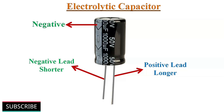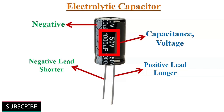Electrolytic capacitors are polarized capacitors. They must be connected in the circuit according to the marking on their case. The stripe marking on the case indicates the negative connection. The capacitance value in microfarads and voltage rating is directly printed on the case.